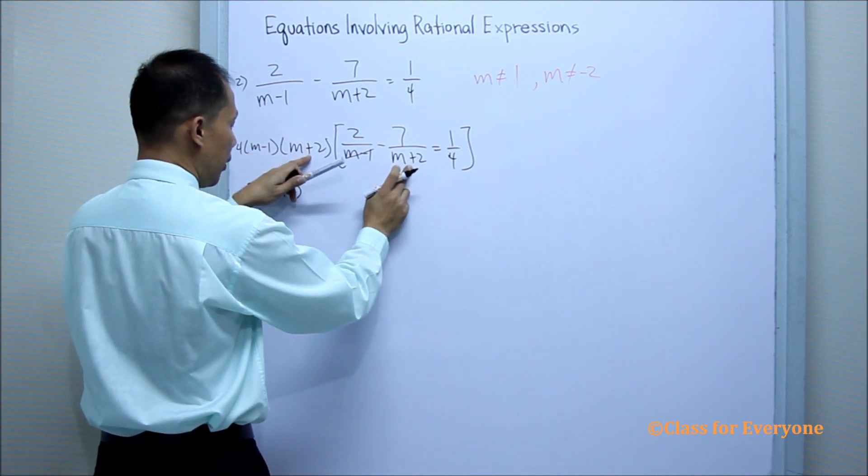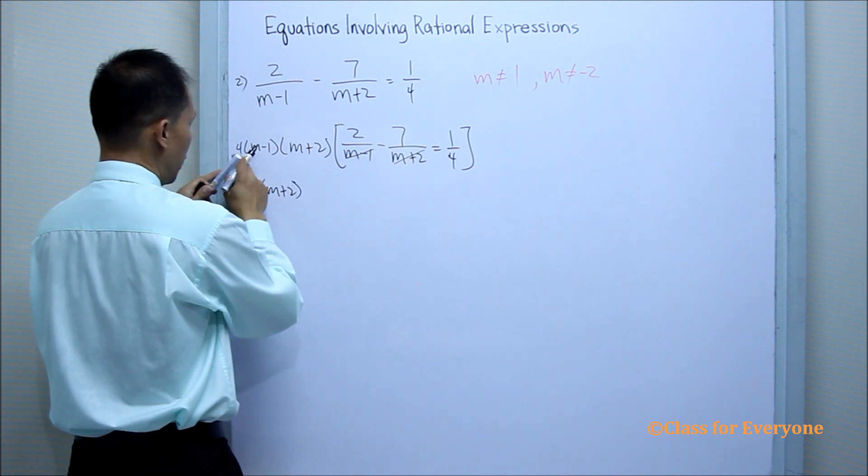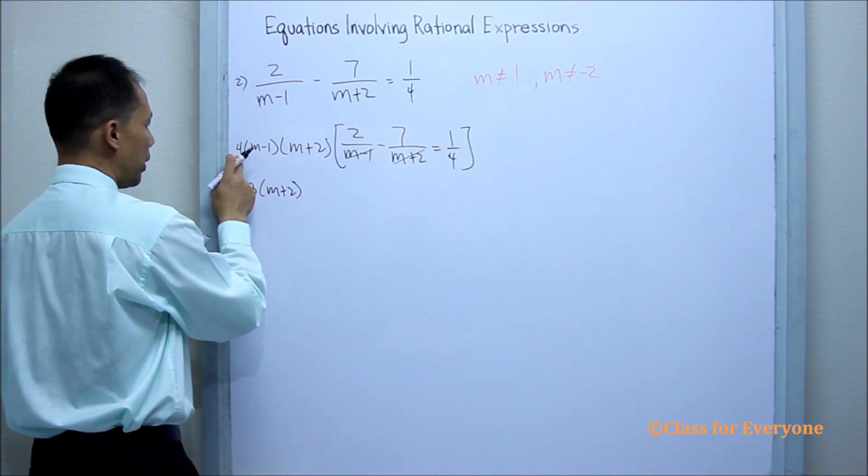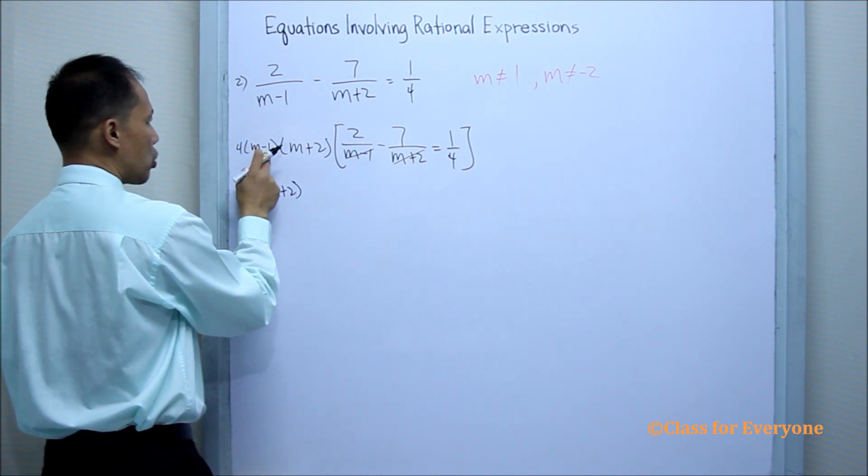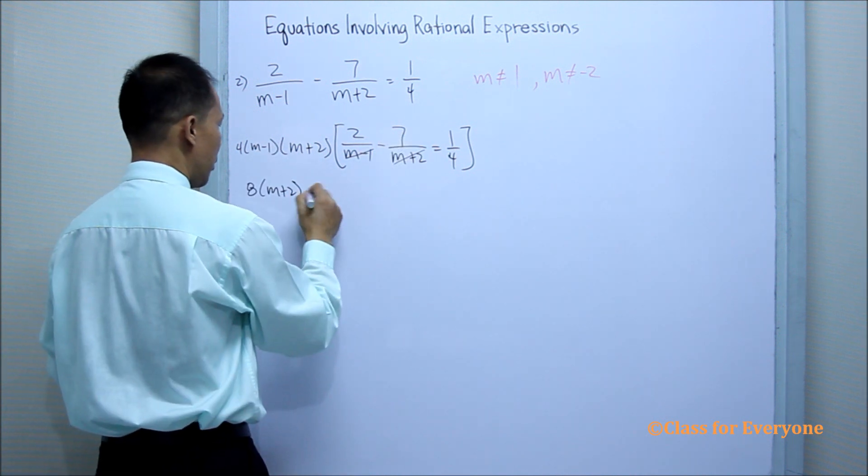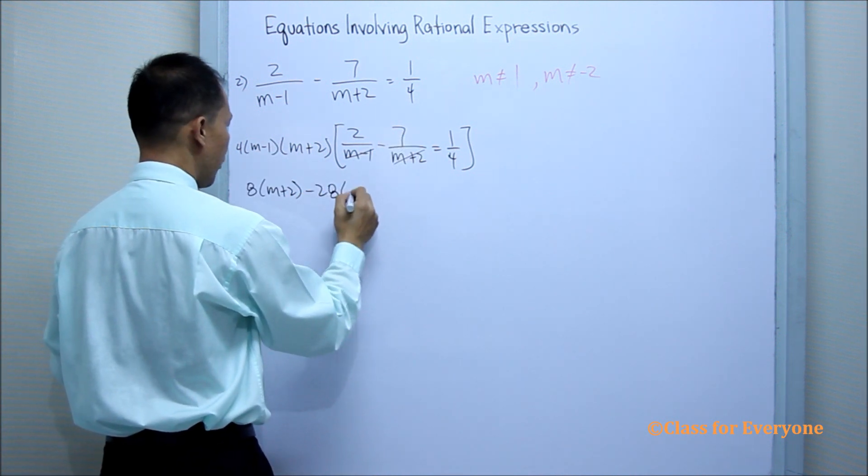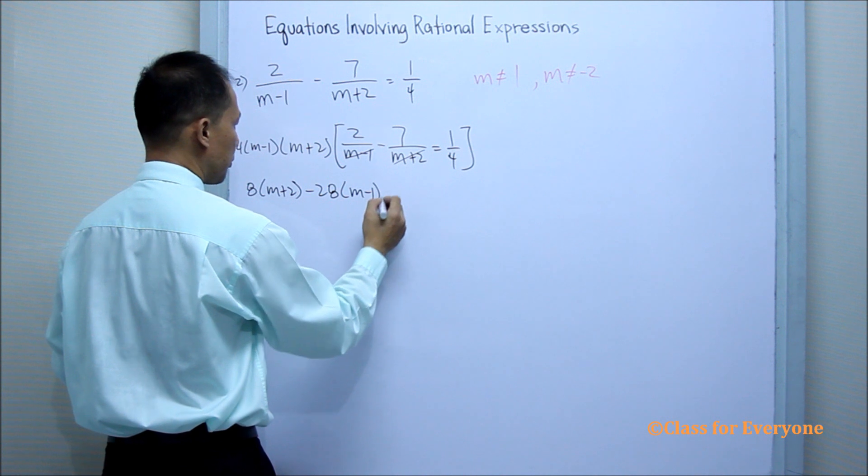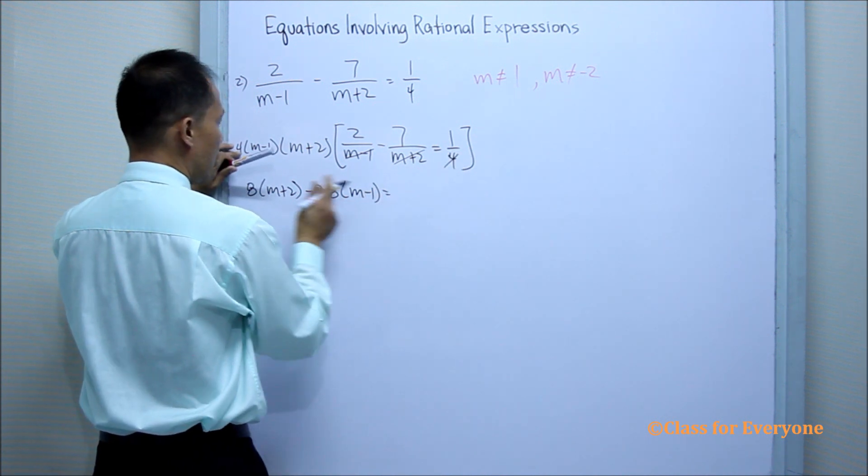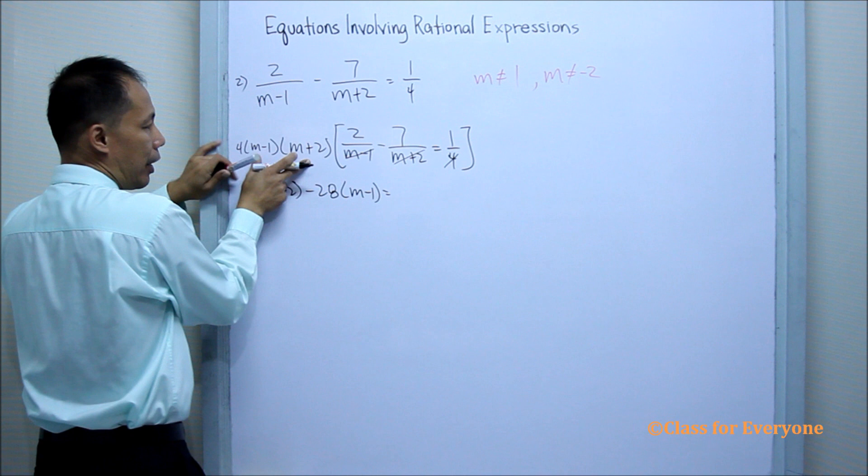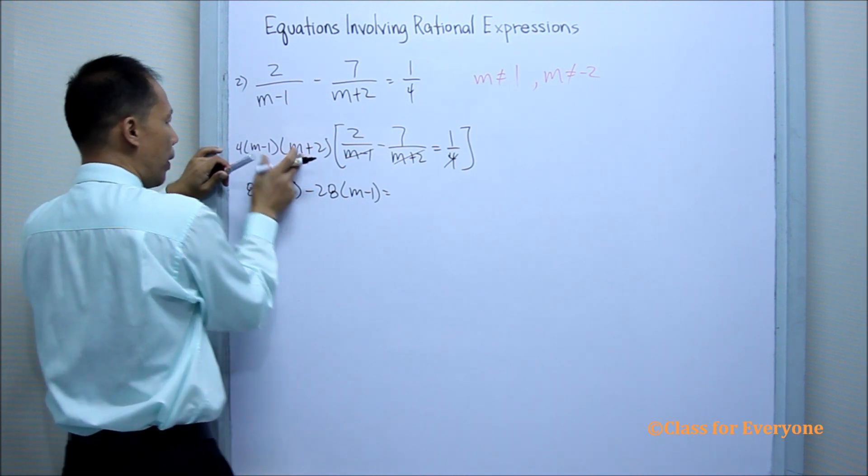We can divide this one. So the remaining LCD now will only be 4 times m minus 1 times 7 minus 28 m minus 1 equals. We can divide this one.